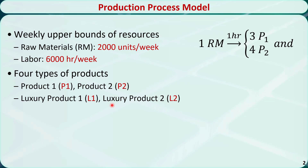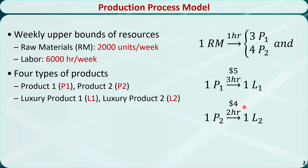We assume the demand for these products is unlimited. Processing one unit of raw material requires one hour of labor and yields three units of product 1 and four units of product 2. If we further spend $5 and 3 hours to process one unit of product 1, we get one unit of luxury product 1. If we further spend $4 and 2 hours to process one unit of product 2, we get one unit of luxury product 2.